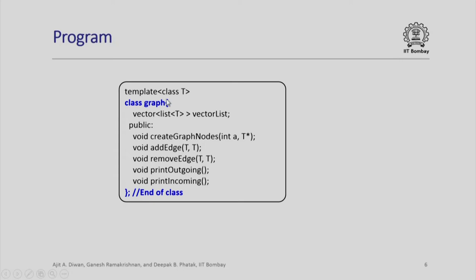First we define the template class T. The class graph is what we are going to define — it is a vector list as we said. The public components are: one, create graph nodes; two, add edge; three, remove edge. Currently we are describing them as void because there is nothing to be returned — we just either add or remove an edge based on the parameters given. Similarly, we have a function to print outgoing edges and a function to print incoming edges. That is a simple description of the class.